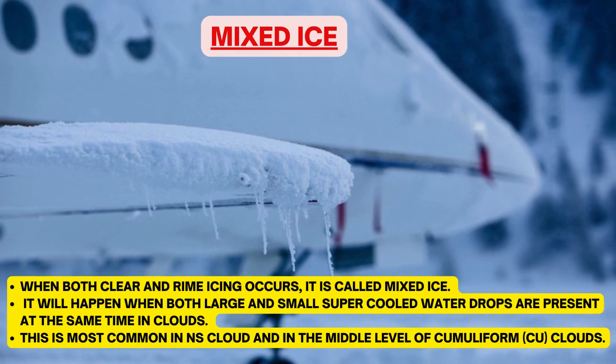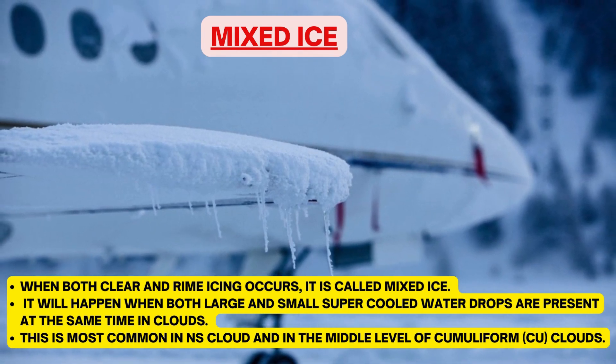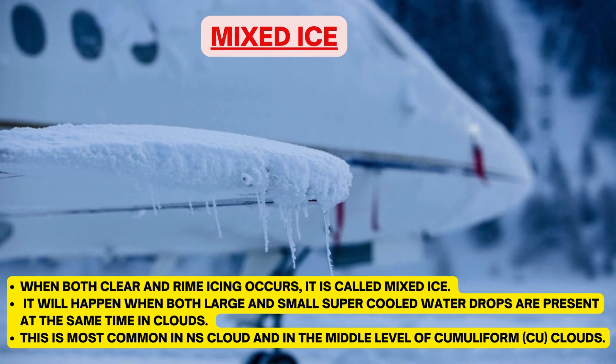Mixed ice is the easiest to understand. When both clear and rime icing occur together, it is called mixed ice. It happens when both large and small supercooled water drops are present at the same time in clouds, and this is most common in nimbostratus clouds and in the middle level of cumuliform clouds.